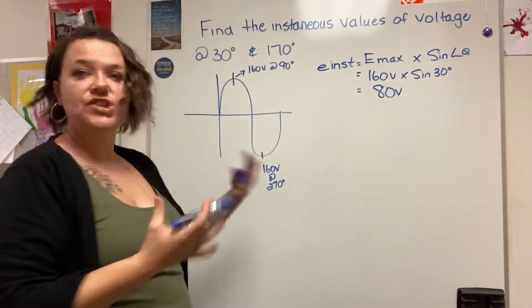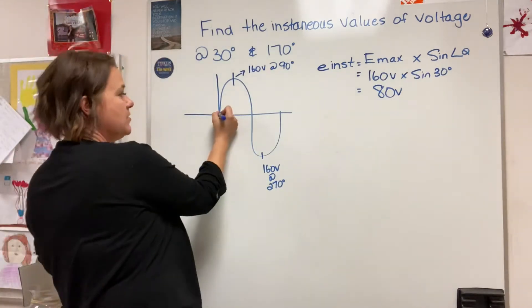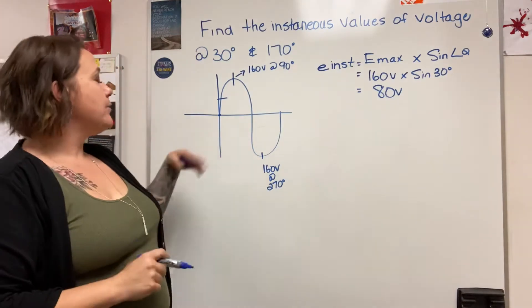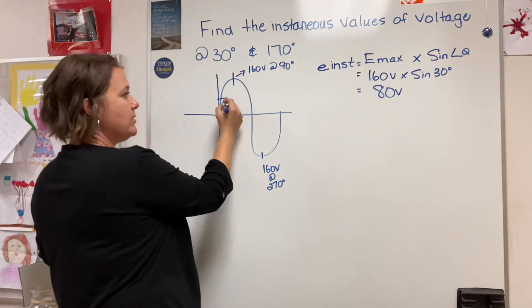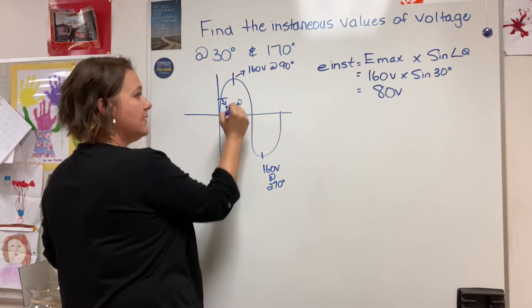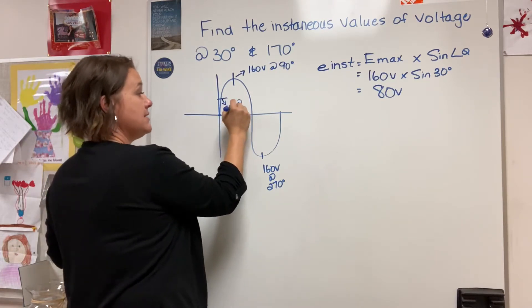Just showing roughly here, this would be zero. This is 90. Probably around here if we were to put this on our oscilloscope we would see that we're generating 80 volts at 30 degrees.